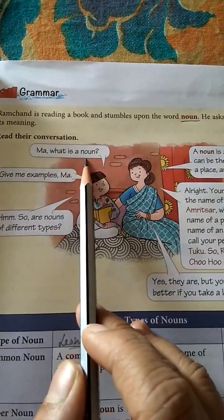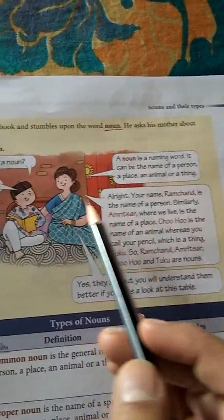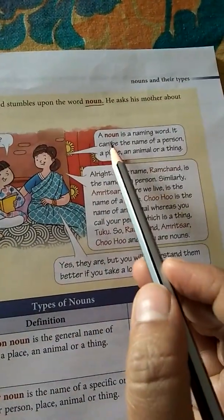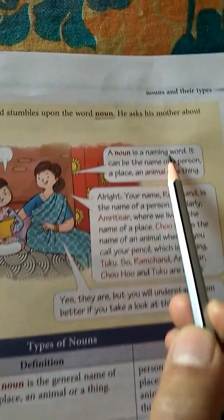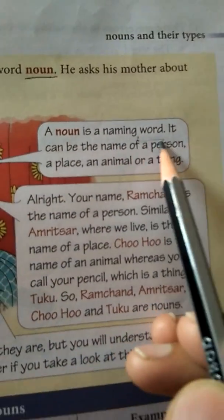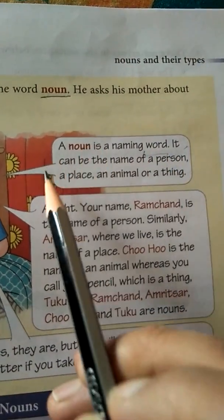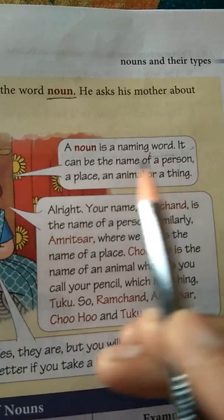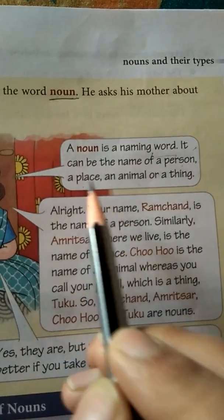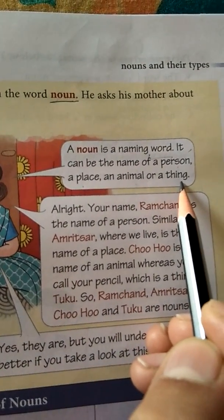Ma, what is a noun? His mother answers: A noun is a naming word. I told you that a noun is a naming word. What does it name? It can be the name of a person, a place, an animal, or a thing.